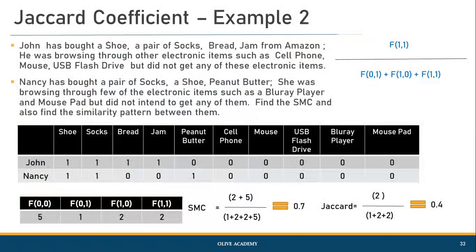Applying the same Jaccard formula to the John and Nancy example, it turns out there is actually 40% similarity between John's and Nancy's buying patterns, whereas the Simple Matching Coefficient extrapolated the overall value to 70%, which is misleading. That is why Jaccard Coefficient plays a vital role in finding true data similarity between two different binary attribute vectors.